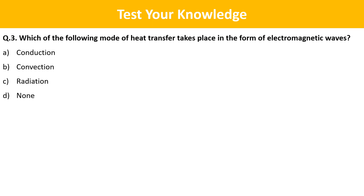Question 3: Which of the following modes of heat transfer takes place in the form of electromagnetic waves? Option A: Conduction. Option B: Convection. Option C: Radiation. Option D: None. The correct answer is Option C — Radiation.